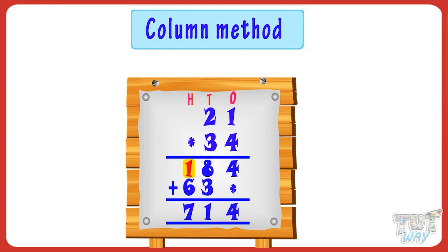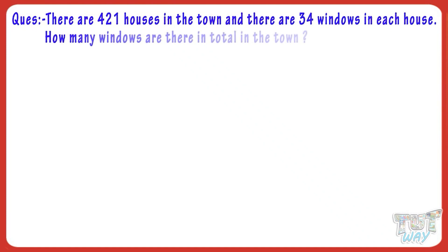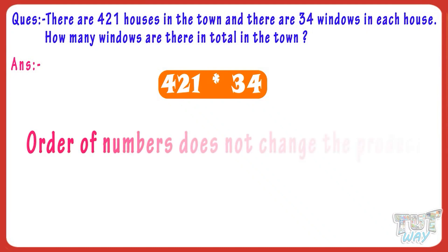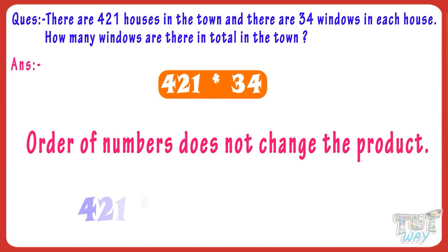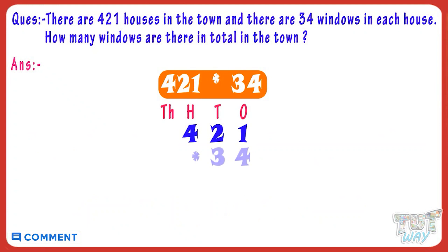We will see many examples for practice. There are 421 houses in the town and there are 34 windows in each house. How many windows are there in total in the town? We will multiply 421 by 34. Remember, order of numbers does not change the product — 421 multiplied by 34 equals 34 multiplied by 421. In any sum — addition, subtraction, or multiplication — we first align the numbers.